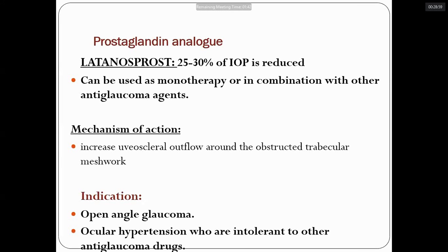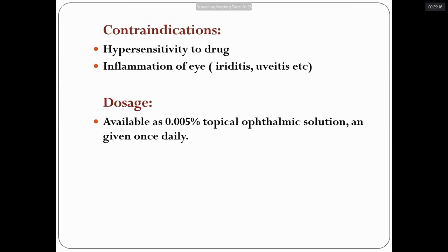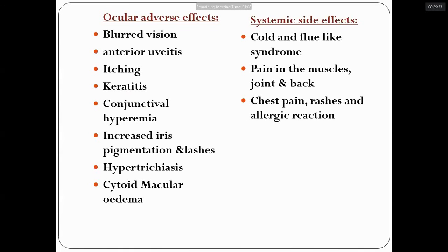Latanoprost is used in open-angle glaucoma and ocular hypertension; it can also be used in patients who have not yet developed glaucoma. Contraindications include hypersensitivity and ocular inflammation — it is not used in uveitis or active ocular inflammatory disease. It is used once daily, making it easy to use. Long-term use can cause cystoid macular edema and keratitis as ocular side effects. Patients are advised to use this drug just before sleep. Systemic side effects include cold and flu-like symptoms, muscle and joint pain, back and chest pain, rashes, and allergic reactions.